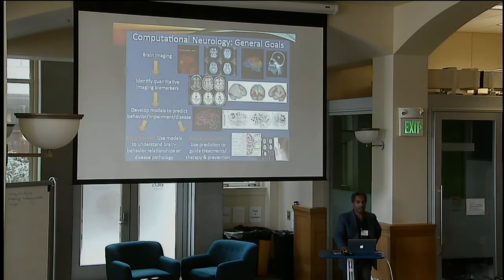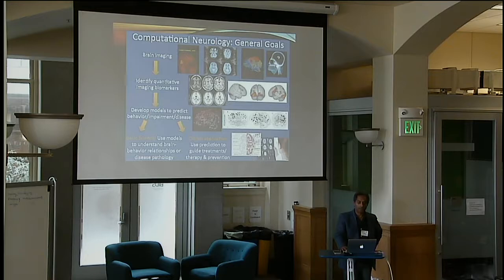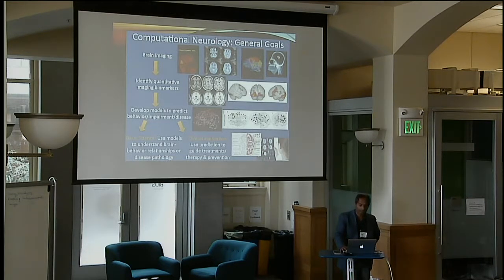Knowing that the brain is a very massively interconnected network, the ability to extract these networks has recently become available. Now we're in a really good position to use these networks and apply what we know about how graphs work to model diseases. You take images from the brain, you identify the quantitative imaging biomarkers — a lot of this voxel-level analysis was discussed over the last couple of days.